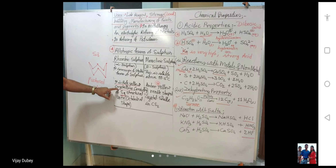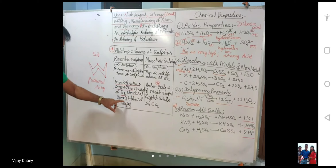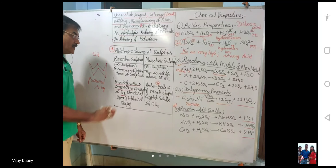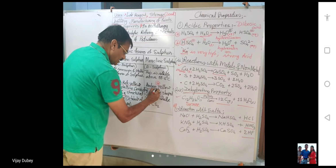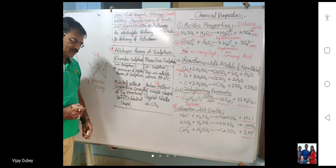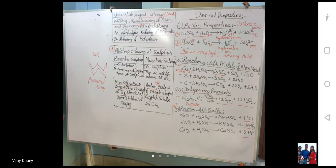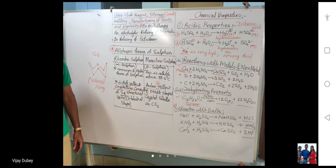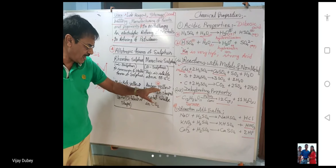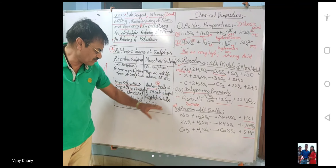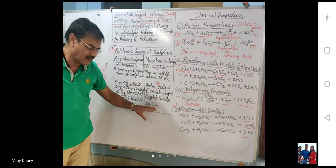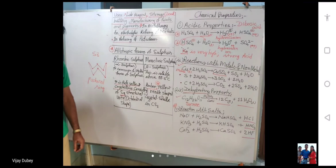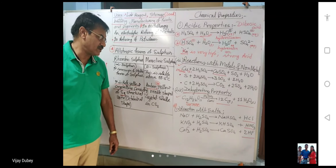Rhombic sulfur is pale yellow crystalline, consisting of S8 structural units packed in an octahedral shape. Monoclinic sulfur is amber-colored — a light brown color — and exists as needle-shaped crystals. It is soluble in sulfur dioxide.